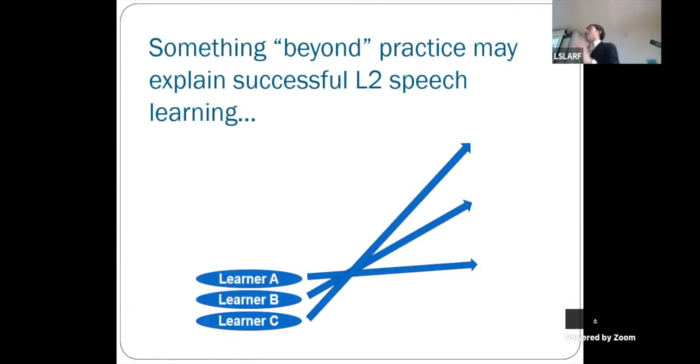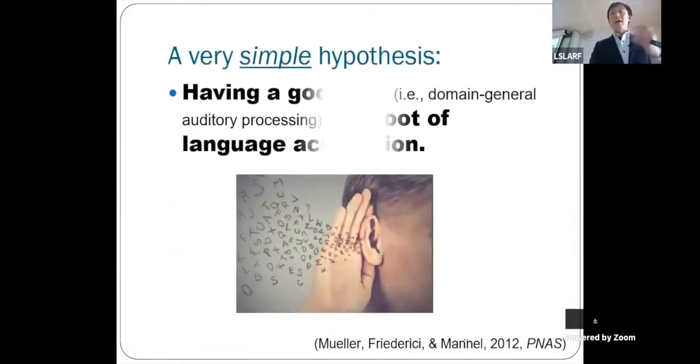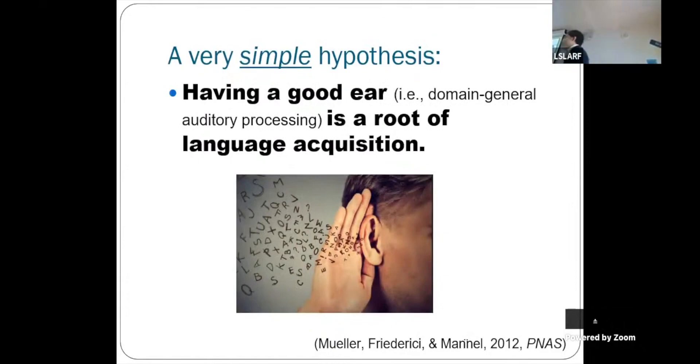There's so many factors affecting these individual differences. One probably hotly debated topic as of 2022 in the field of SLA is to identify the source of individual variation. In other words, let's find out the mechanism underlying successful second language speech learning. There's so many factors, but our team has proposed something very simple: basically, having a good ear, in scholarly terms auditory processing, this explains a lot.